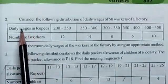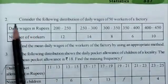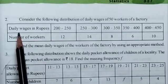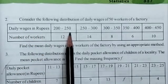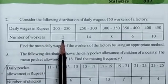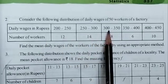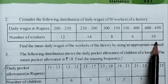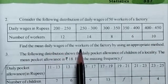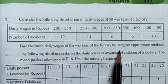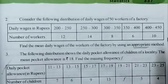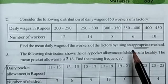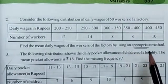Children, this is exercise 11.14.1, second question. Consider the following distribution of daily wages of 50 workers of a factory. Daily wages in rupees: 200–250 with 12 workers, 250–300 with 14 workers, 300–350 with 8 workers, 350–400 with 6 workers, 400–450 with 10 workers. Find the mean daily wages of the workers of the factory by using an appropriate method — today we are going to discuss the step deviation method.